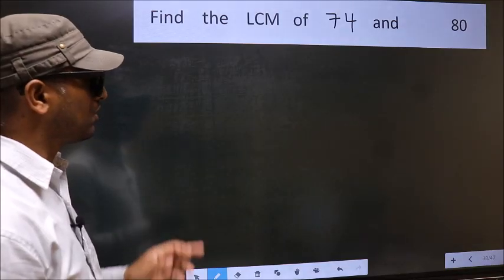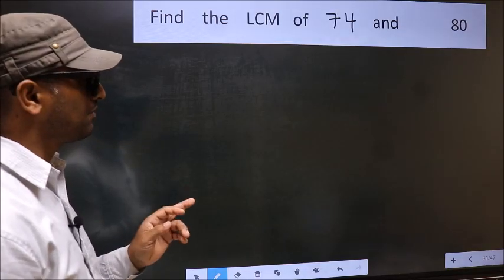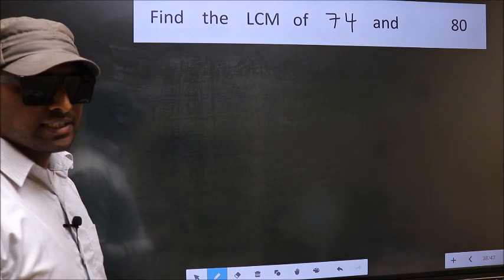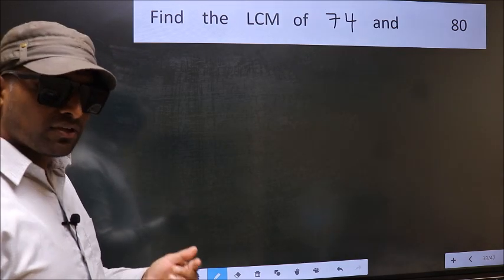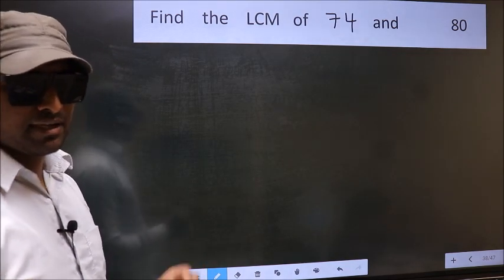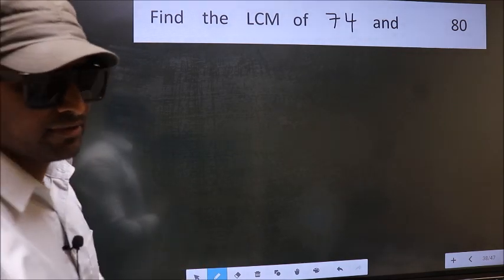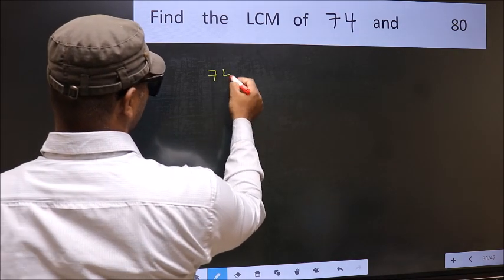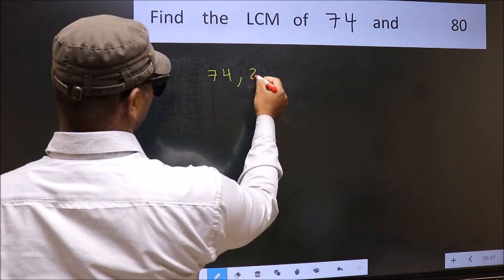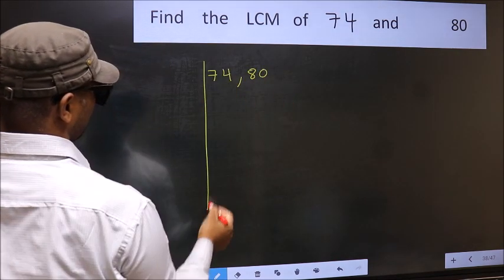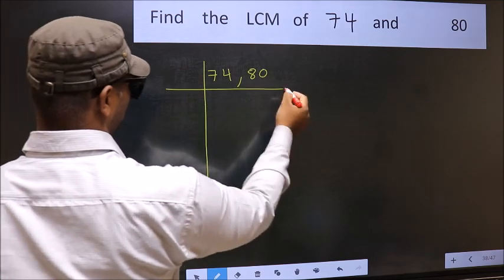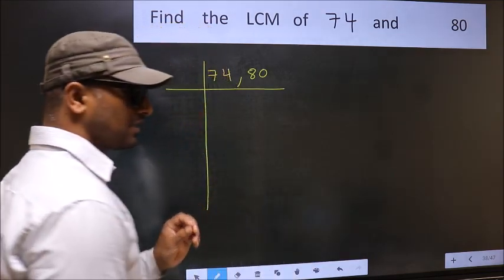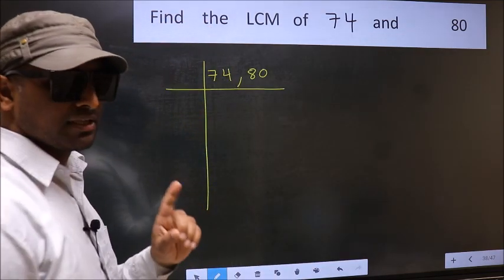Find the LCM of 74 and 80. To find the LCM, we should frame it in this way — writing 74 and 80 side by side. This is step 1.